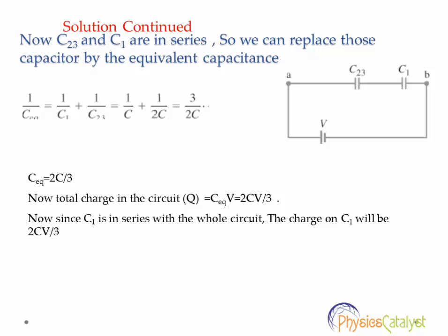Now the capacitances C2 and C1 are in series. So we can replace those capacitors by the equivalent capacitance of 1 by C_eq equal to 1 by C1 plus 1 by C2. By putting the values of C1 and C3 here, we can find that C equivalent is equal to 2C by 3. So the total equivalent capacitance of the circuit is 2C by 3.